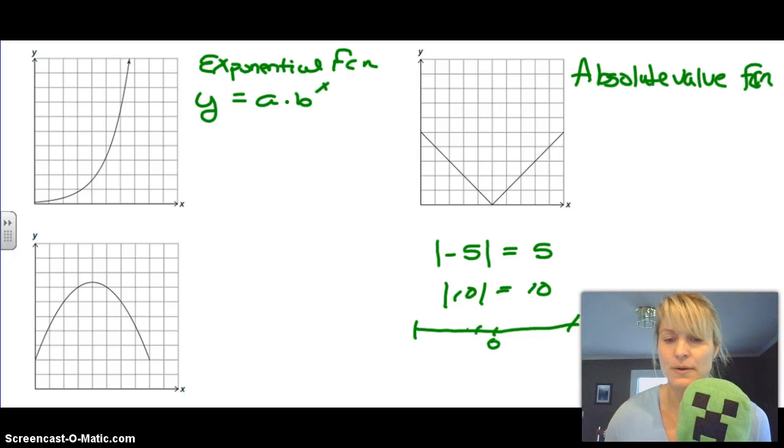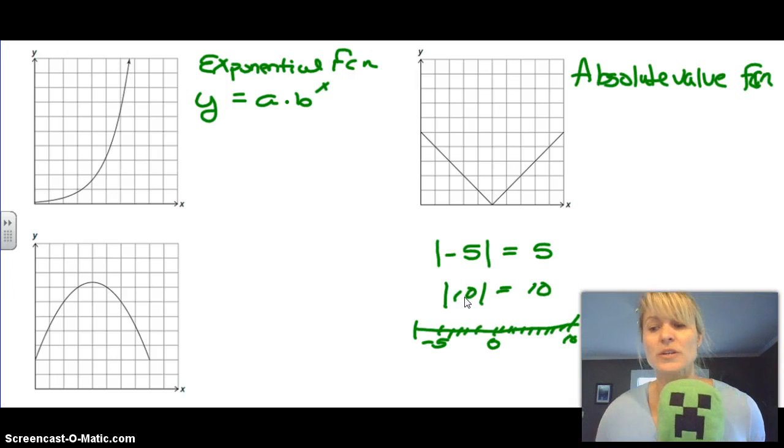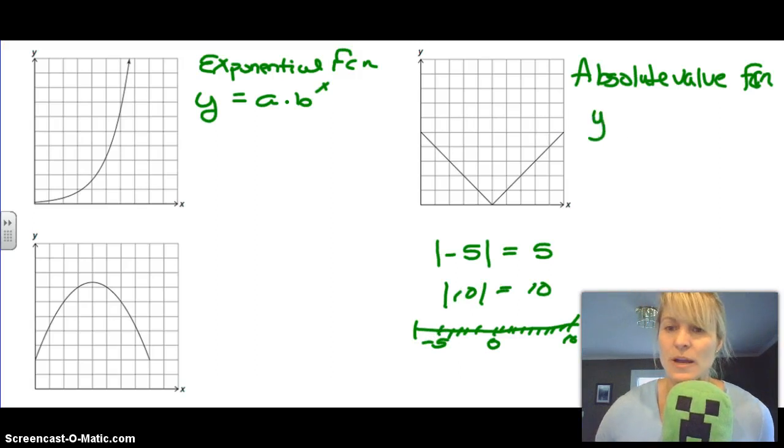Really what you're doing with absolute value is you're looking at a number line. Here's your 0, and there's negative 5. The reason it becomes positive 5 is because really you're just looking for how far away it is from 0. So negative 5 is 5 places away from 0. The distance is 5 away. So the absolute value of negative 5 is 5. The absolute value of 10 is 10. This is 10, this is 10 - it's 10 places away from 0. So absolute value is really telling you the distance you are away from something and not taking into account whether it's negative or positive. The equation for absolute value is just the absolute value of x.